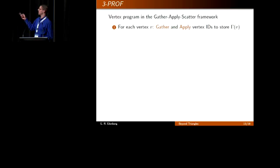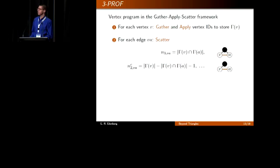The first step is to gather the neighborhood vector at each vertex. Each vertex looks at its neighbors, pulls the ID of each neighbor, and then stores this as gamma v at the vertex. Then each edge scatters the following quantity, just the size of this intersection set. If you look, this is the number of vertices that are neighbors of both v and a, and this is exactly the number of triangles.